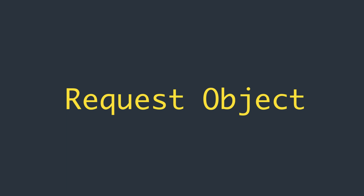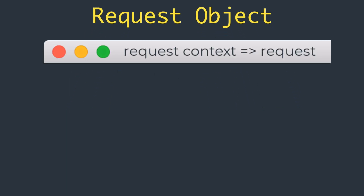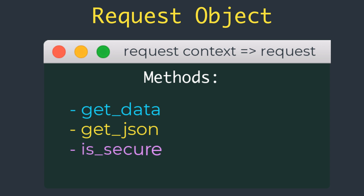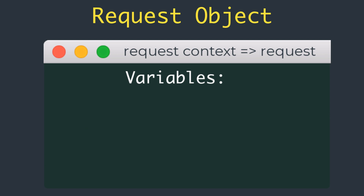Flask exposes a request object as a context variable named request. This is an extremely useful object that contains all the information the client included in the HTTP request. Flask provides various attributes and methods to get several pieces of information the client sent. Some key methods include: get_data(), which returns buffered data from the request body; get_json(), which returns a Python dictionary with the parsed JSON included in the body; and is_secure, which returns True if the request came through a secure HTTPS connection.